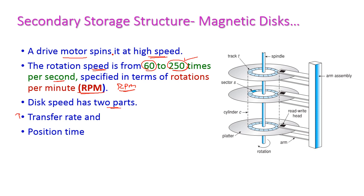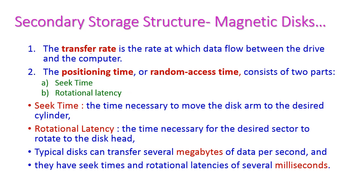Disk performance has two aspects: the first is transfer rate, which is the amount of data transferred from the magnetic disk to the computer per unit time. The second is positioning time, which is the time taken for the head to reach a particular sector.